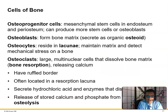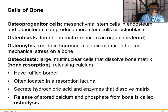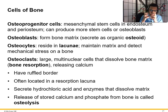Osteoprogenitor cells are mesenchymal stem cells in the endosteum and periosteum — they can produce more stem cells or osteoblasts. Osteoblasts form bone matrix by secreting organic osteoid. Osteocytes reside in lacunae, maintain matrix, and detect mechanical stress on bone. Osteoclasts are large multinuclear cells that dissolve bone matrix through bone resorption, releasing calcium. They have a ruffled border, are often located in a resorption lacunae, and secrete hydrochloric acid and enzymes that dissolve the matrix.